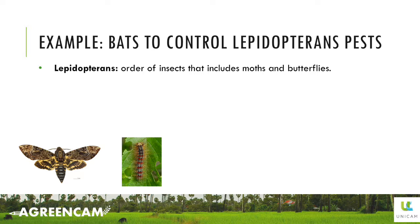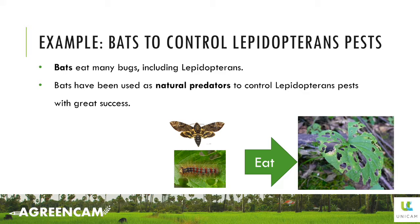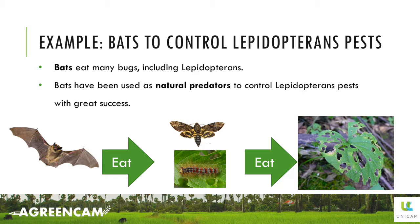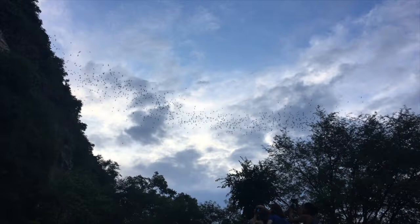We will now see an example of biological control. One of the most common pests are Lepidopterans, an order of insects that includes butterflies and moths. These insects affect almost all cultivated plants. During their caterpillar stage, they eat the leaves and reproduce very fast, becoming a pest that causes a lot of damage. Recently, many investigations have shown that this pest can be controlled with bats. Bats normally eat bugs, including Lepidopterans. Hence, if bats eat them, they control the population so Lepidopterans don't become a pest. We think this might be interesting to apply in Cambodia, because bats are a local species here and there are actually many bats around the fields, as you can see in this video of the bat cave in Batambang.